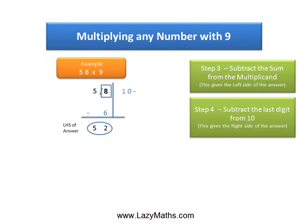To get the remaining part of the answer, we simply take the digit after the separator or the digit in the 1's place, which is 8. Subtract the 8 from 10 and we get 2, and 2 becomes the right-hand side of the answer.